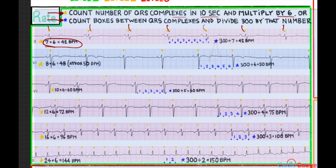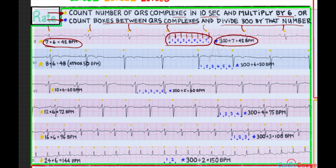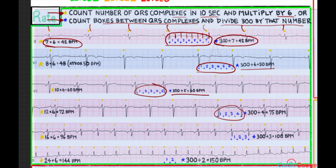The second way is to count the number of boxes between QRS complexes and then divide 300 by that number — the medium-sized boxes. Counting: one, two, three, four, five, six, seven. In this case, 300 divided by seven is about 42 beats per minute. I've memorized these numbers: six boxes is 50 bpm, five boxes is 60 bpm, four boxes is 75, three boxes is 100, two boxes is 150. Generally when I do the rate, I use this second method because it's faster.